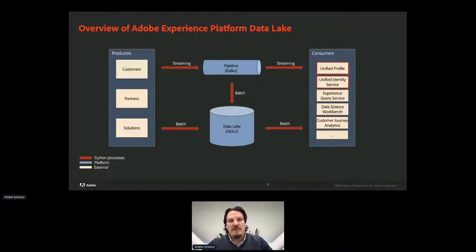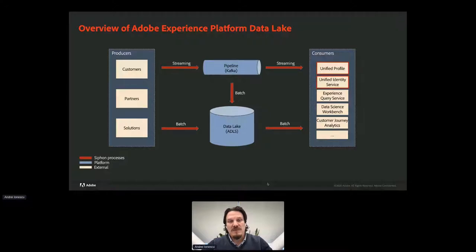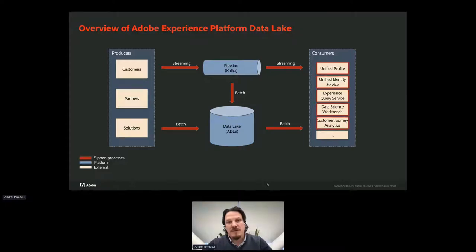Looking at the consumers: first we have the Unified Profile and Unified Identity services — these two combine to enable the merging and enriching of user profiles over an identity graph generated from various data sources, providing a 360-degree view of those profiles. Next is the Experience Query Service, a high-performance distributed SQL engine that enables customers to query their data and integrate with external BI tools. Next is Data Science Workbench, and finally Customer Journey Analytics which provides out-of-the-box slicing and dicing of behavioral data.